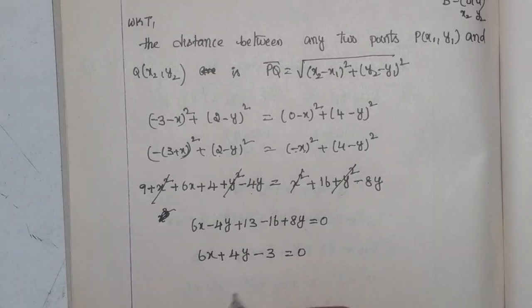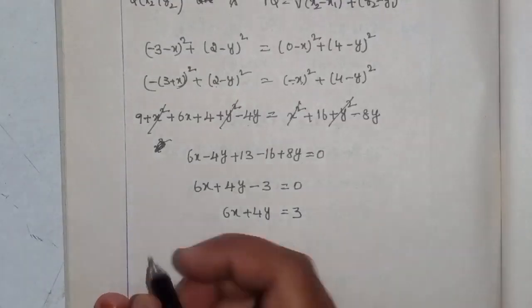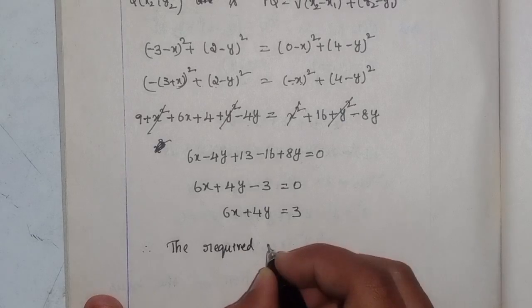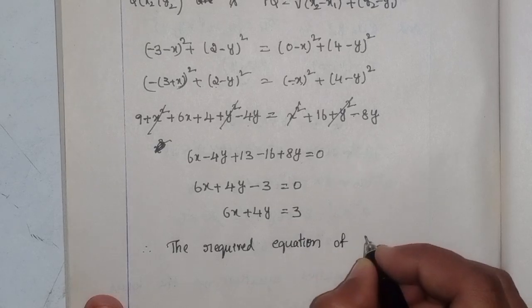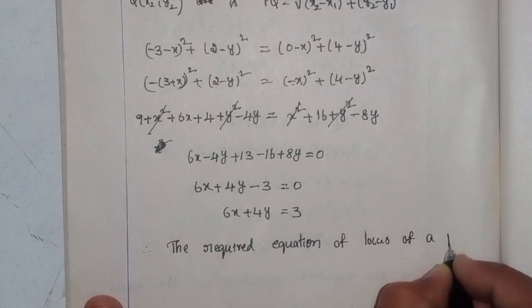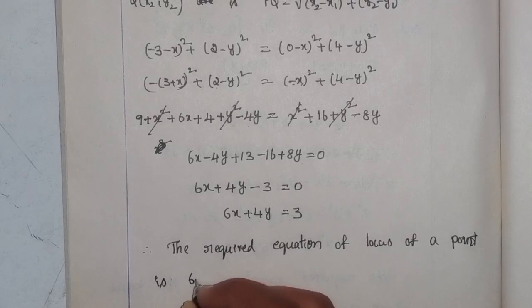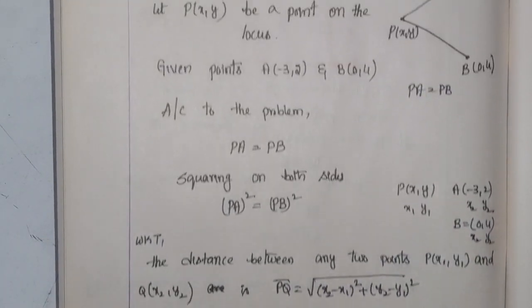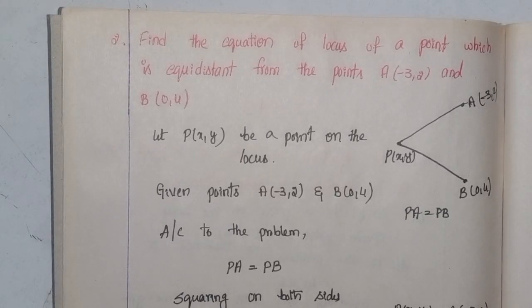Therefore, 6x + 4y = 3. This is the required equation. The required equation of the locus of the point is 6x + 4y = 3. That is the solution to question number two. If you have any doubts, please comment. Next class we will discuss question number three. Thank you for watching, take care.